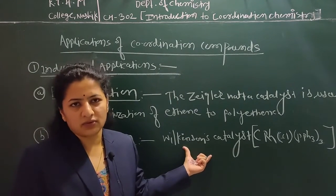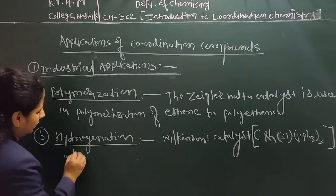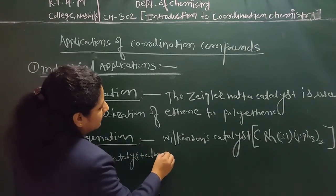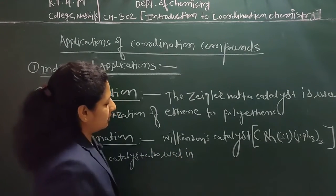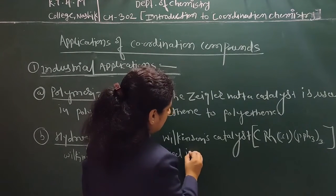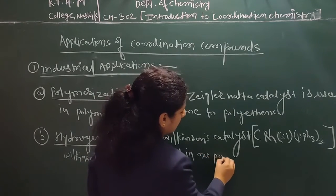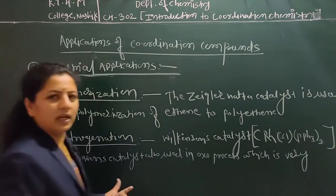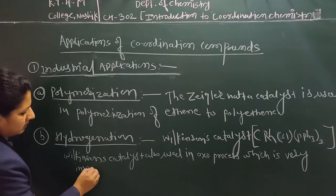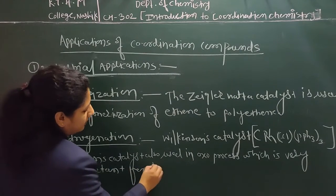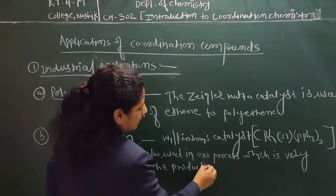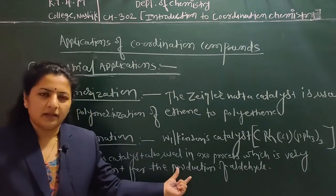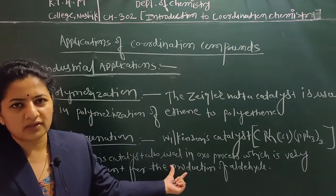This selectivity is very important in pharmaceutical use. The catalyst is also used in the oxo process, which is very important for the production of aldehydes. After aldehyde is formed, it is converted into alcohol. So the Wilkinson's catalyst is important both in selective hydrogenation and in the oxo process.